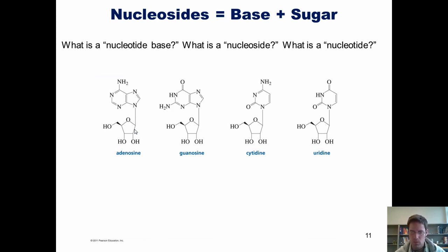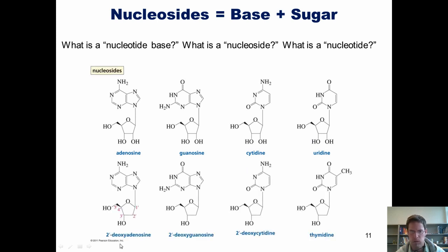Nucleotide bases, once again, are adenine, guanine, cytosine, uracil, and thymine. Their nucleoside counterparts are called adenosine, guanine, cytidine, and uridine in RNA. And in DNA, they're called 2' deoxyadenosine, 2' deoxyguanine, 2' deoxycytidine, and thymidine.